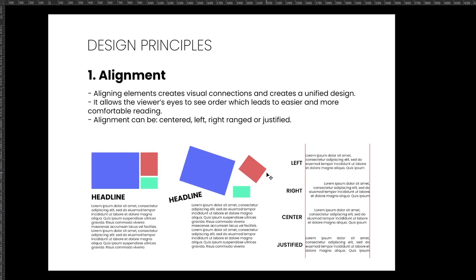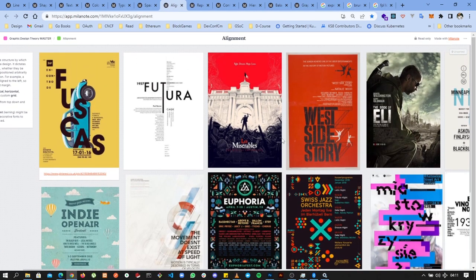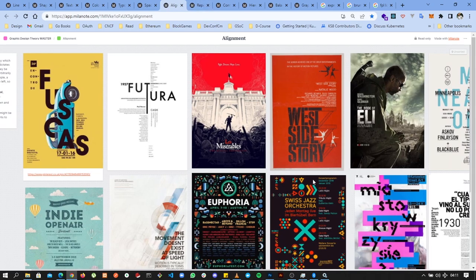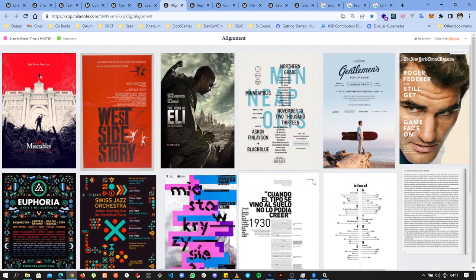The first design principle is alignment. Comparing a design where elements are properly aligned versus one where they're scattered — the aligned one feels more visually appealing because you know where to start and how to process the elements. Aligning elements creates visual connections and a unified design, allowing the viewer's eyes to flow more easily for comfortable reading. Alignment can be centered, left, right, or justified.